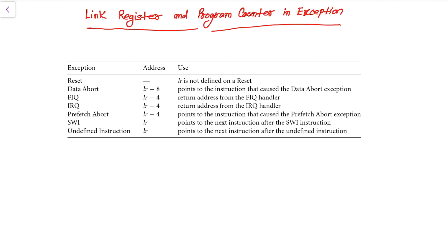Welcome back. In a previous lesson I had shown you about the exception priority labels and how the processor manages those priorities. In this lesson I am going to show you what happens to the link register and program counter when an exception occurs in our microcontroller.